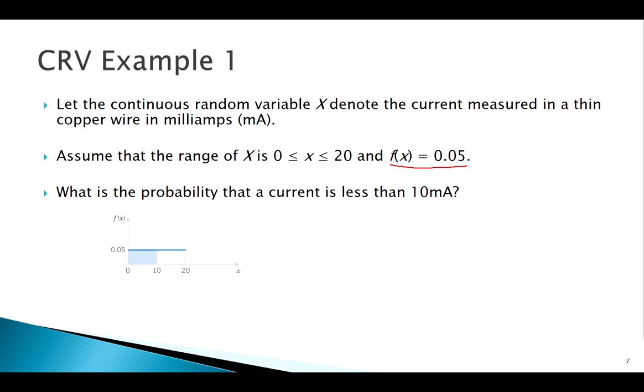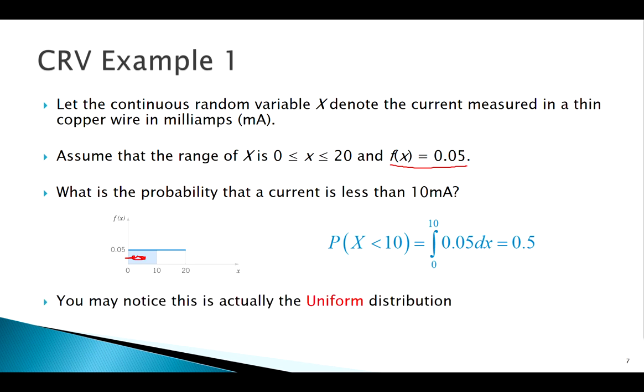We're looking for probability X less than 10, so we shaded this area here. Writing this out, you could just look at this picture and say that's the big rectangle, it's half the area. You may recognize this distribution as the uniform distribution.